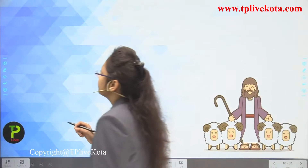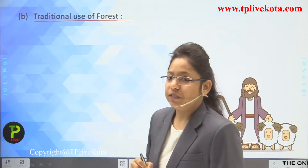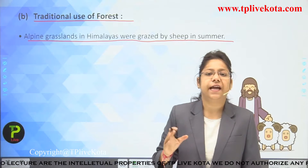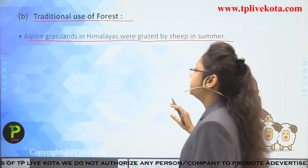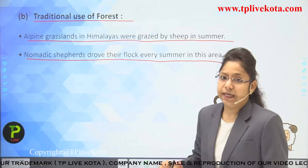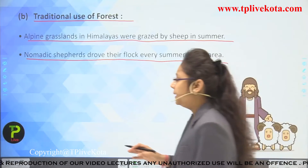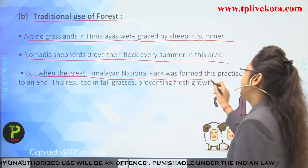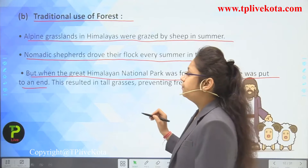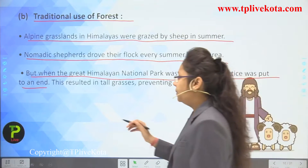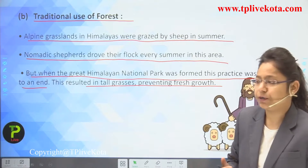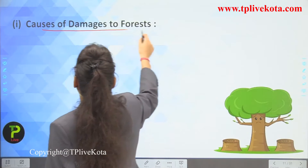Traditional use of forest: Alpine grasslands in the Himalayas were grazed by sheep in summer. Nomadic shepherds brought their flocks every summer to this area. But when the Great Himalayan National Park was formed, this practice was put to an end. As a result, very tall grasses grew, preventing fresh growth.